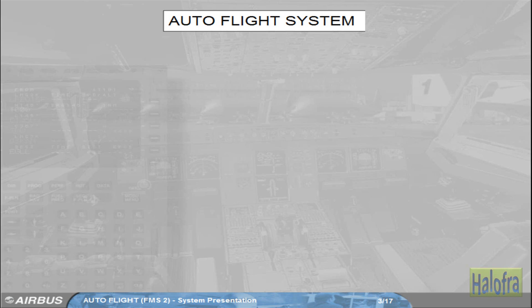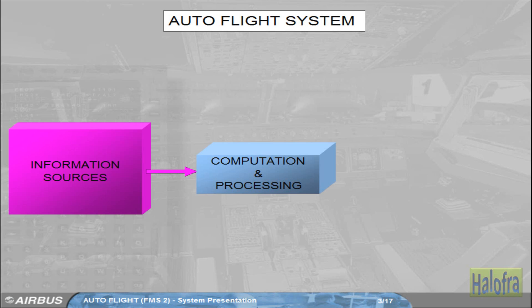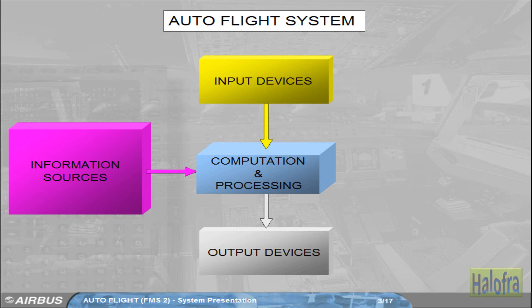The AFS could be represented as four main sections. At the heart of the system is a computation and processing section — the brain. The central processing section has access to several information sources. The pilots have access to the central processing section via input devices. Finally, after computation and processing, commands are provided to output devices.